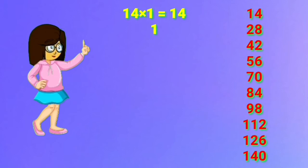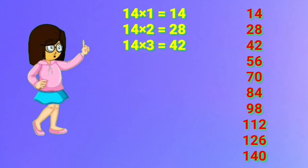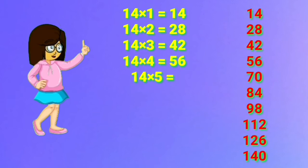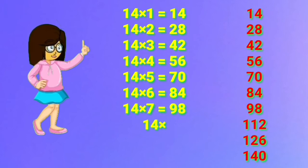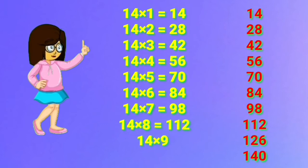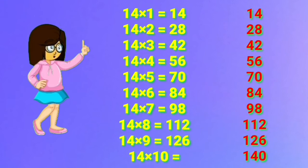14 one's are 14. 14 two's are 28. 14 three's are 42. 14 four's are 56. 14 five's are 70. 14 six's are 84. 14 seven's are 98. 14 eight's are 112. 14 nine's are 126. 14 ten's are 140.